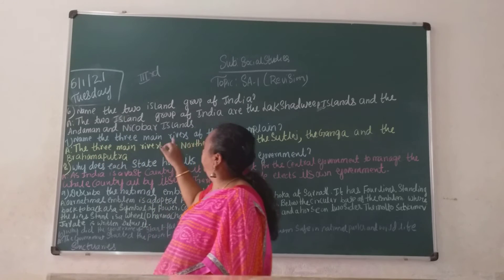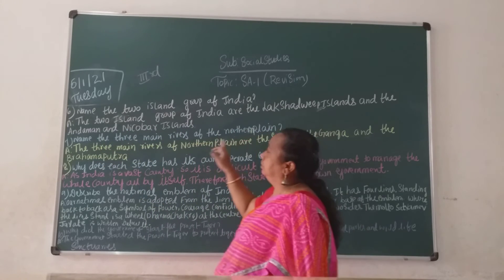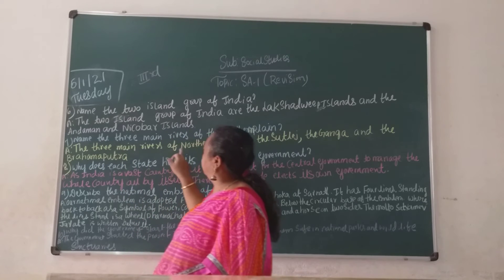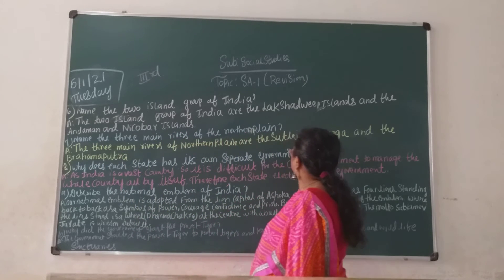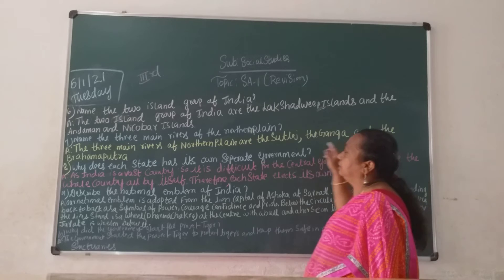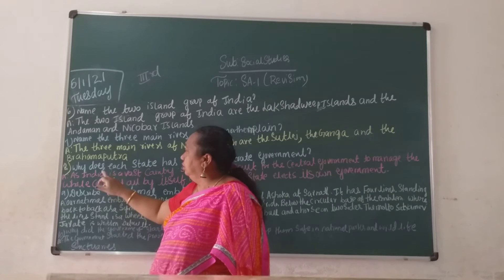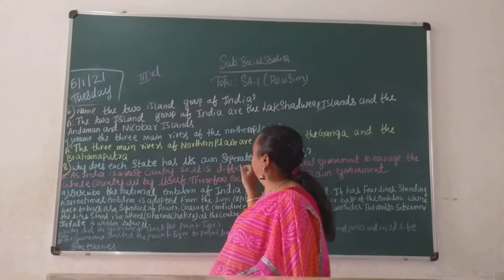Name the three main rivers of the Northern Plains. The three main rivers of the Northern Plains are the Sutlej, the Ganga and the Brahmaputra. Why does each state have its own government?